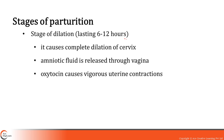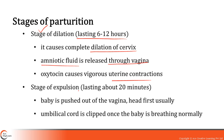The first stage of parturition is the stage of dilation, lasting 6 to 12 hours, during which there is dilation of the cervix and amniotic fluid is released through the vagina — that's when labor pains begin. Oxytocin causes vigorous uterine contraction during this stage. The second stage is the stage of expulsion, lasting about 20 minutes, where the baby is pushed out of the vagina — in most cases, the head comes out first. Doctors clip the umbilical cord once the baby is breathing normally.